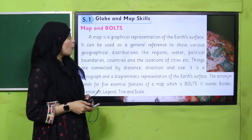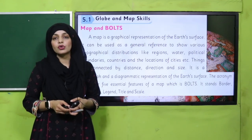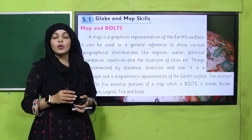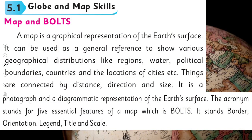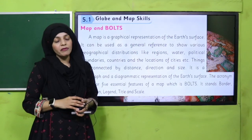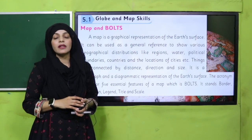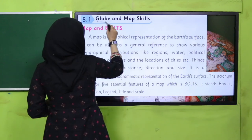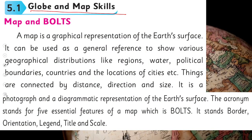Now quickly open Globe and Map Skills in your social studies book — unit number five, part one. I hope everybody has opened the page. Now let's start reading. Put your fingers where I read. Globe and map skills — to read a globe and map, the skills we need are map and BOLTS.